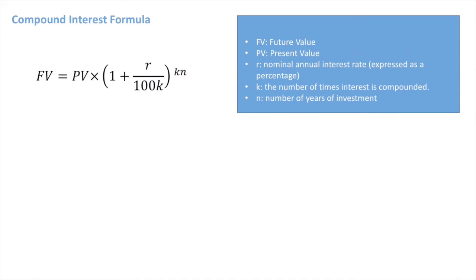Now just to clarify something about K. How often interest is compounded makes a big difference. A couple of terms you need to be comfortable with are monthly, which would mean that K equals 12 since there are 12 months in a year.